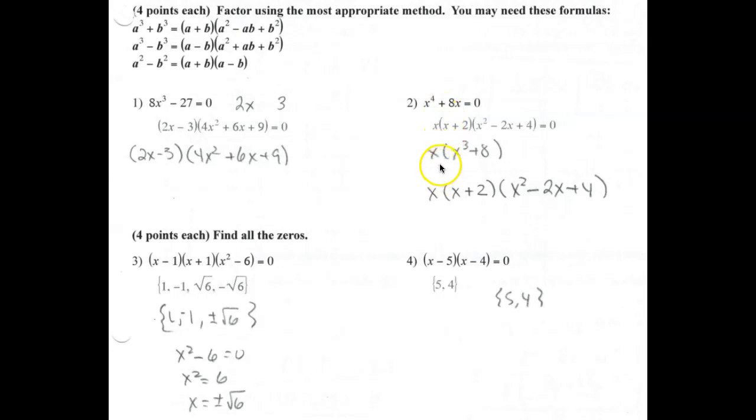On this one, first thing you need to do is factor out an x, leaving you x³ + 8. So in this example, the cubed root of your first term is x. The cubed root of your second term is 2. So you're going to use this formula. You're going to plug a in for x and 2 in for b. So that will give you, don't forget your x you factored out, x(x + 2)(x² - 2x + 4).